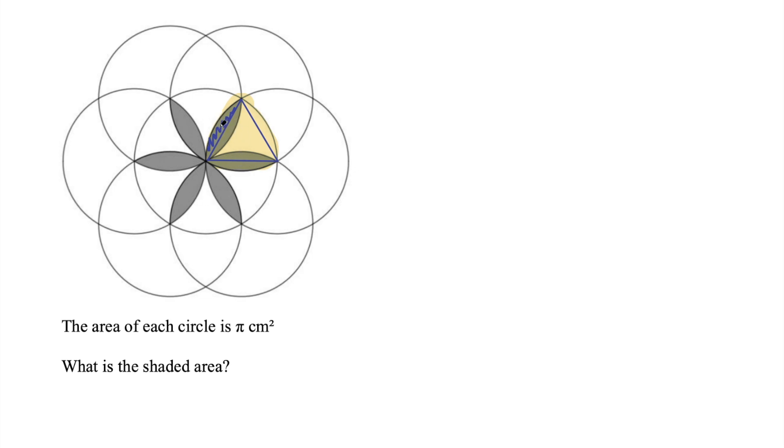So how can we find the area of that segment? Well, as we've said, this is an equilateral triangle, so we are going to find the area of the sector, subtract the area of that equilateral triangle, and that will give us the area of this segment.